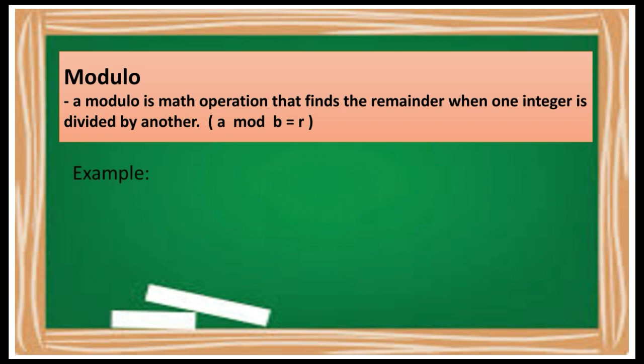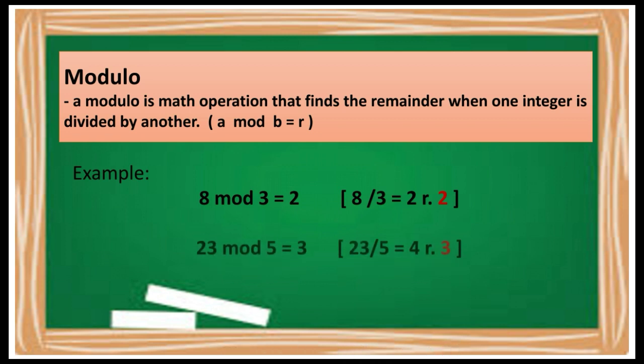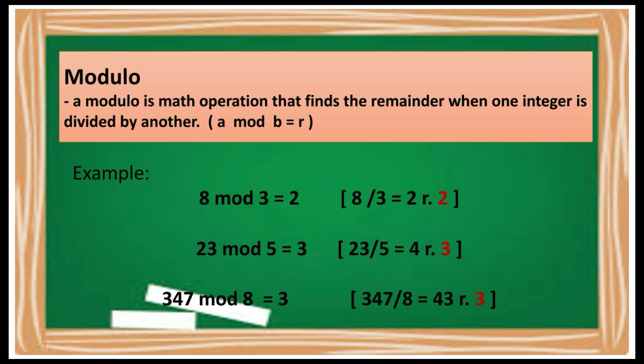For example, 8 mod 3 is 2 because when you divide 8 by 3 you will get the quotient of 2 and the remainder of 2. Next, 23 mod 5 is 3 because when you divide 23 by 5 you will get the quotient of 4 with the remainder of 3. Last one: 347 mod 8 is 3 because when you divide 347 by 8 you will get the quotient of 43 with the remainder of 3. So this is what modulo means — you just have to get the remainder.